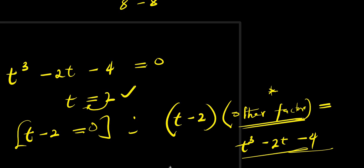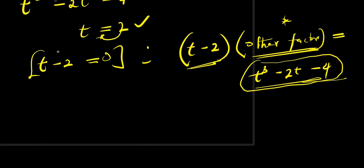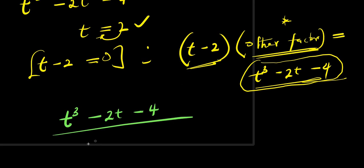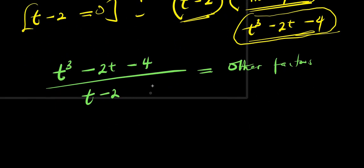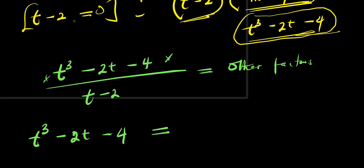So let's find the other factors. We are simply going to divide t cubed minus 2t minus 4 by t minus 2, and we are going to get the other factors. We can make use of long division or the synthetic method. But in this video, we are going to make use of the synthetic method. In synthetic method, we copy out the numerator: t cubed minus 2t minus 4.